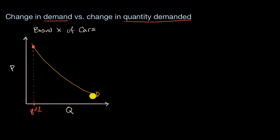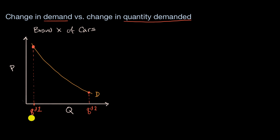When people talk about demand, they're talking about the whole curve. Following the law of demand, at a low price this is associated with a high quantity demanded — quantity demanded two. So to be very particular: quantity demanded is associated with a particular point on the demand curve, while the demand curve is a set of all of these points that show how price and quantity are associated.